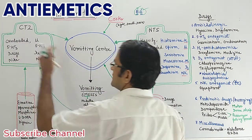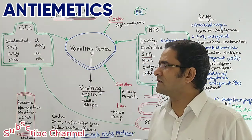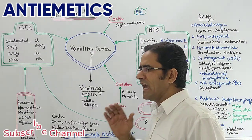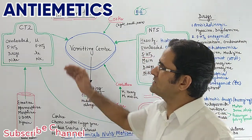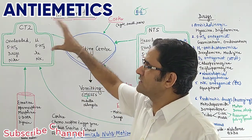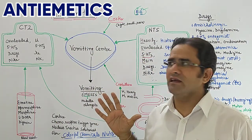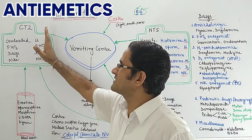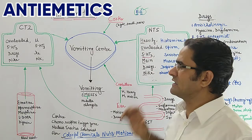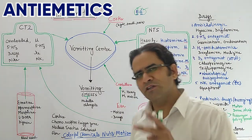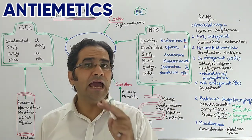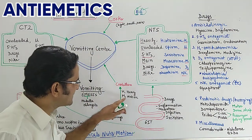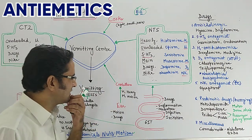Now for the CTZ — chemoreceptor trigger zone — the difference is you have to exclude two things: M and H. It means CTZ is overloaded with five drugs of NK, meaning the same receptors present in NTS apply here, but M1 and H1 are missing from the CTZ.